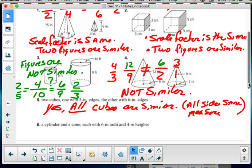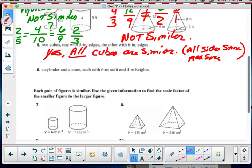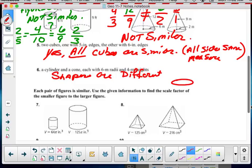A cylinder and a cone. Well, part of this similarity thing is the shapes have to be the same shape. Shapes are different. And if you're not sure, cone, cylinder. So not similar.